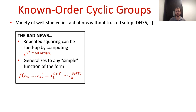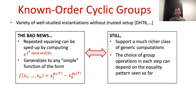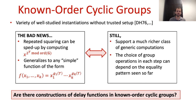One can observe that this problem applies not only to the repeated squaring function, but to any simple enough function that raises the input elements to some fixed exponents. However, hope is not lost, since we can do much more with cyclic groups than just raise elements to fixed exponents. For instance, a computation in a cyclic group can choose its next operation as a function of the equality pattern among group elements it has observed so far. So this raises the question: are there constructions of delay functions in known-order cyclic groups?